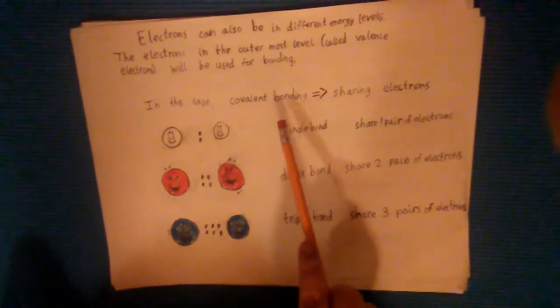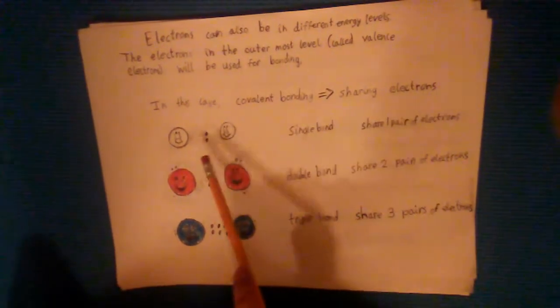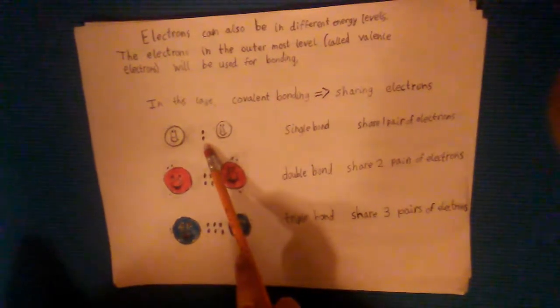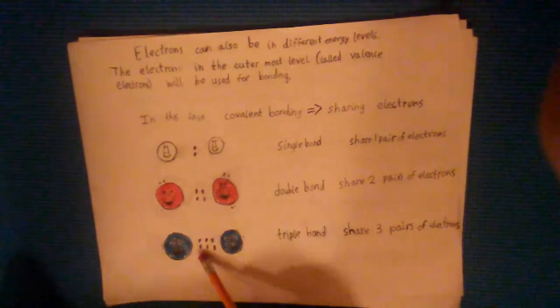In the case of water and carbon dioxide we have covalent bonding which is sharing electrons. You can have a single bond with one pair of electrons that's shared, a double bond with two pairs, or a triple bond with three pairs.